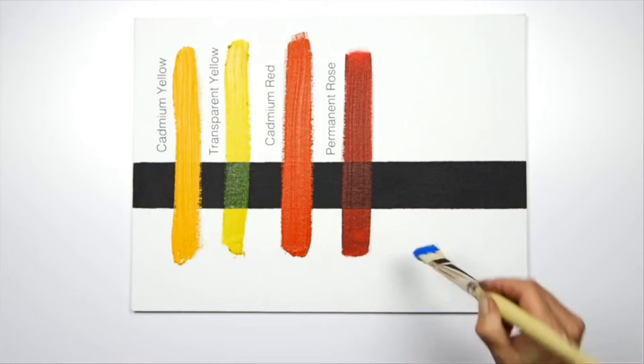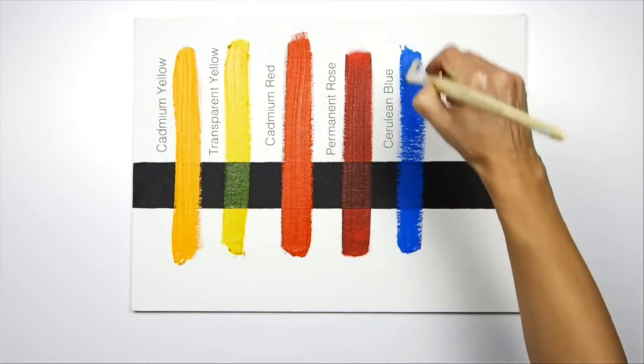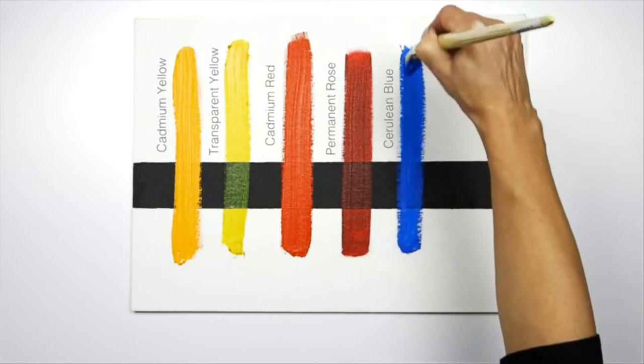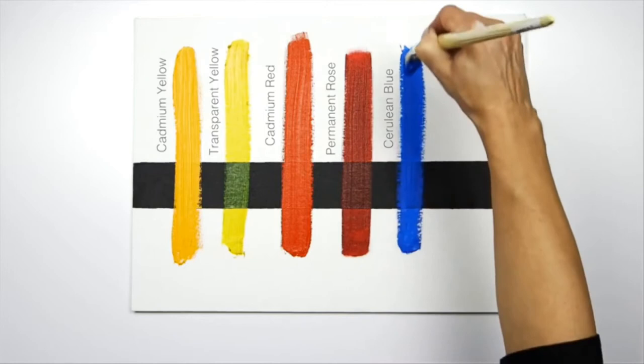The cerulean blue, like the cadmiums, has a really strong opacity, a really nice, heavy, solid color, but doesn't allow the light or the dark to shine through.